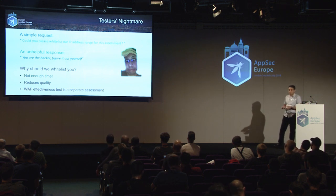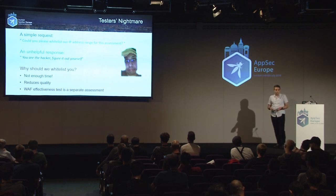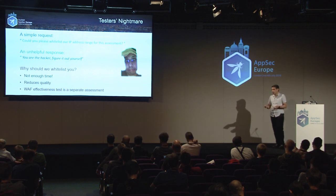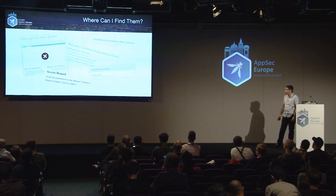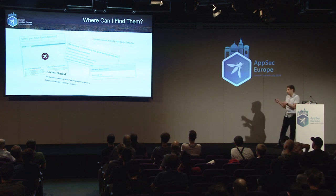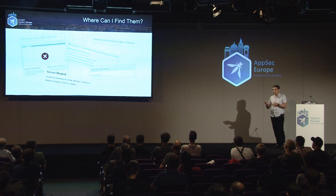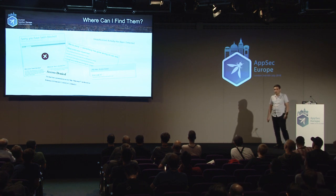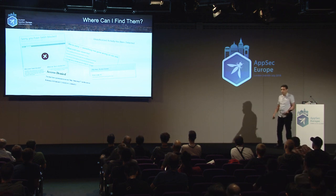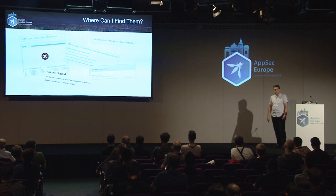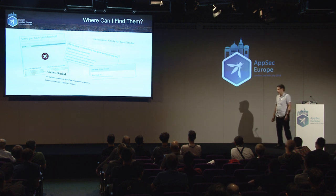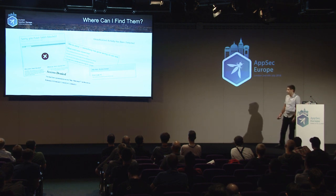WAF effectiveness testing is a completely separate assessment. To find WAFs to bypass, if you have permission, you can send a basic cross-site scripting or SQL injection to a website and see if you receive an error message like 'access denied.' It doesn't matter if the parameter is valid. If you get one of these access denied messages, there is probably a WAF and you have to bypass it.